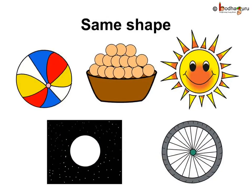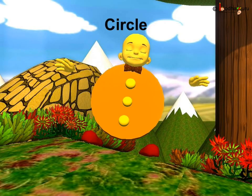Look at the ball, yummy laddus, the sun, the moon and the wheel of your cycle. All of them are of similar shape. Remember, our Squary turned into the shape of the sun. This shape is called circle.